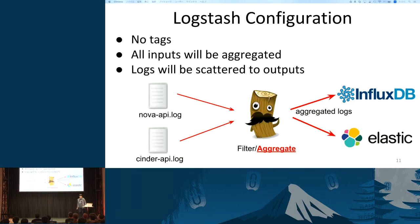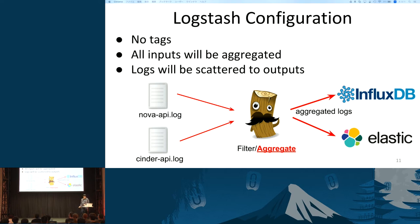If you want to output logs to multiple destinations, you can use the copy plugin. In this example, Fluentd sends the same logs simultaneously to two destinations, InfluxDB and Elasticsearch. Let's take a look at Logstash configuration. Differently from Fluentd, there are no tags in Logstash. All inputs will be aggregated and scattered to all outputs. This figure shows that inputs from Nova API and Cinder API are aggregated and scattered to outputs.